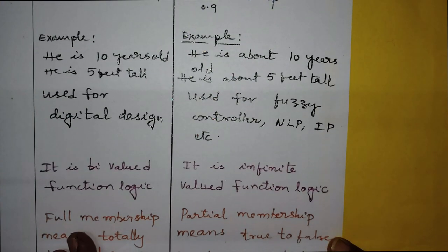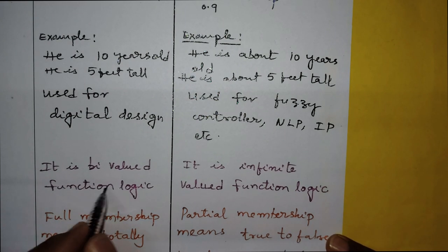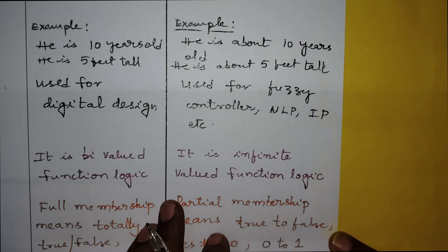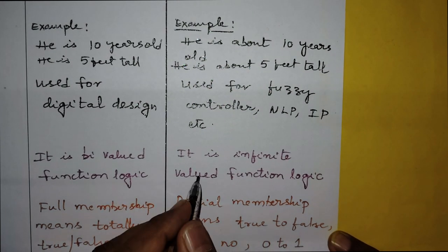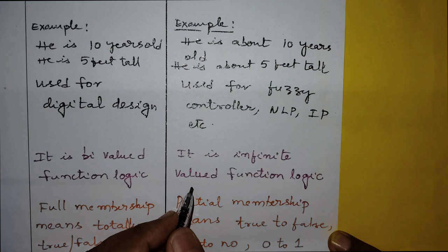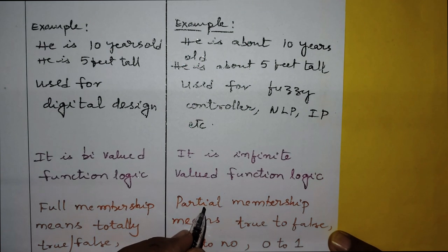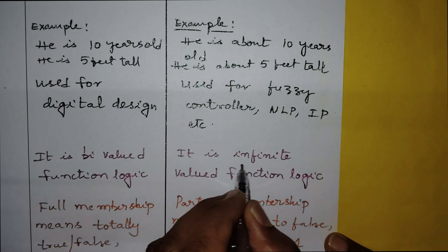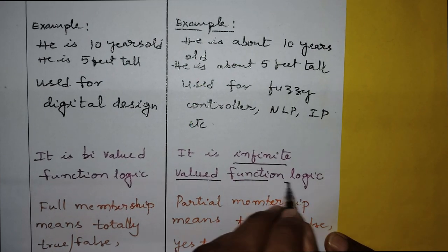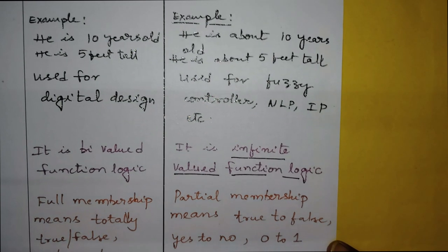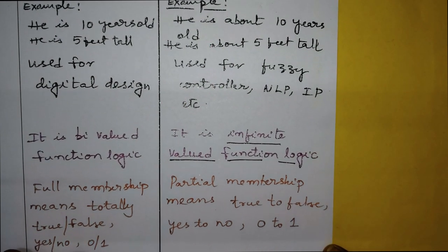Crisp set values are 0 and 1, which is why it is known as a bivalued function logic. Fuzzy set is not bivalued — its values can be 0, 0.1, 0.2, 0.3, 0.4, 0.5, and so on. Because it can take a large number of values, it is known as infinite valued function logic.